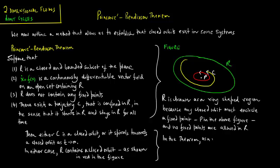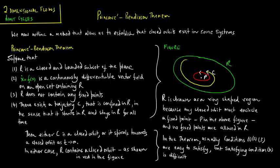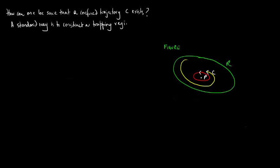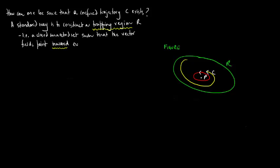In the theorem, usually conditions 1, 2, and 3 are relatively easy to satisfy. But condition 4 is actually difficult to satisfy. So how can one really be sure that a closed trajectory C actually exists? A standard way is to construct a trapping region R, i.e., a closed connected set such that the vector fields point inward everywhere on the boundary of R.